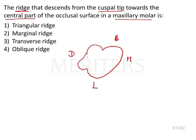Now this is the center of the occlusal surface — it is an imaginary line. Now let us consider this point is the cusp tip. Here this is the cusp tip of the buccal cusp. Here it is the cusp tip of the mesial lingual cusp and here it will be the cusp tip of the distal lingual cusp.